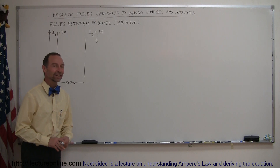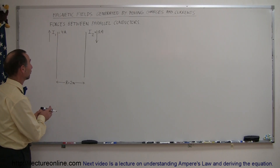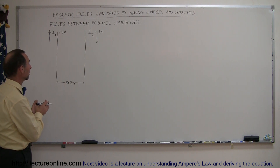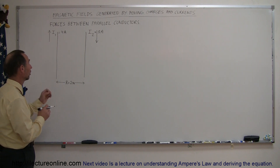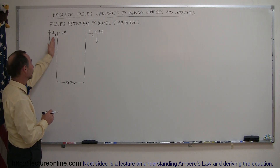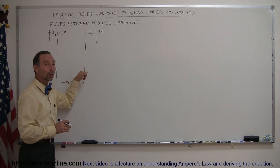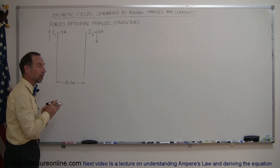Welcome to iLecture Online. Here's another example of how we work with forces and magnetic fields. In this case we have two parallel conductors and we're trying to find the force between them. One has a current of 4 amps going upward, the other one has a current of 8 amps going downward, and they are two meters apart.